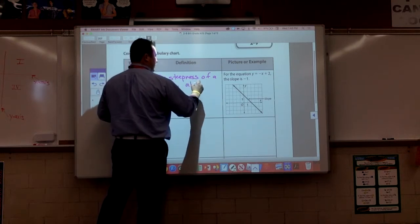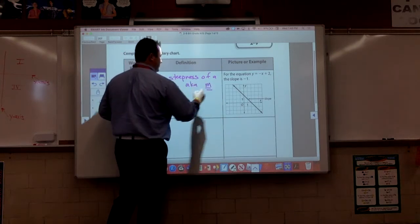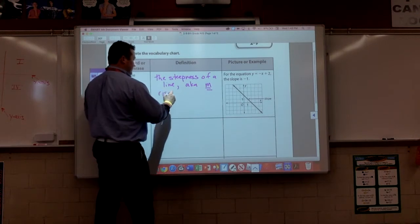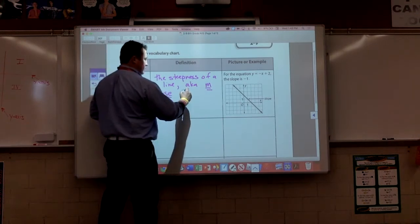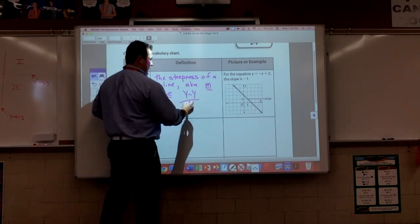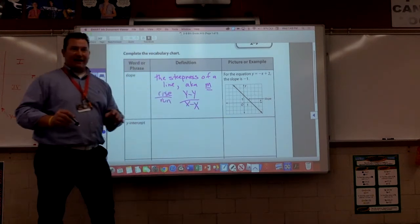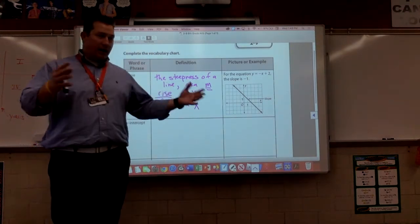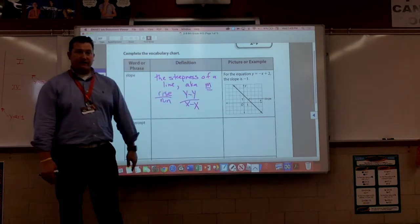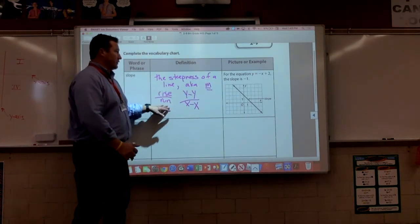It is also known as letter M. It is also known as rise over run. Or y minus y over x minus x. Any of those three things there, we got to know.